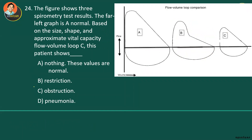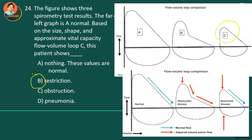Now look at flow-volume loop C from the same three spirometry results. The far left graph is normal (loop A). For loop C, the vital capacity (PVC) is very low — less than 4 liters, less than normal — indicating a restrictive problem. The answer is restrictive disease.